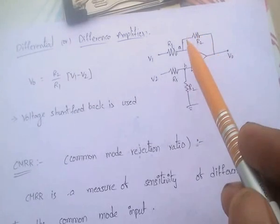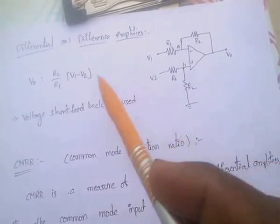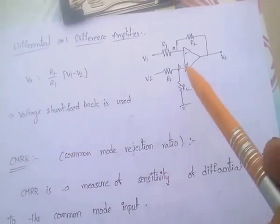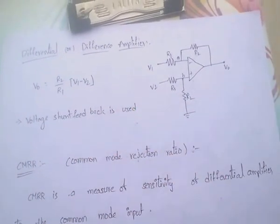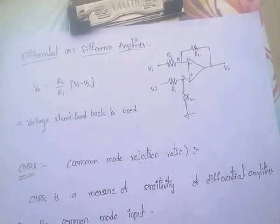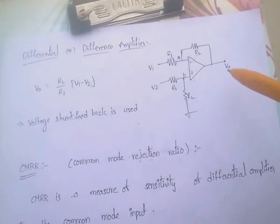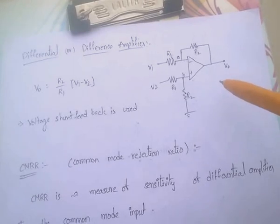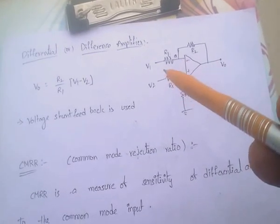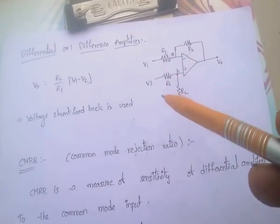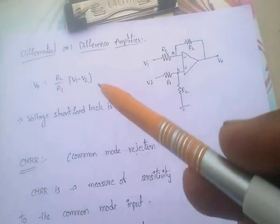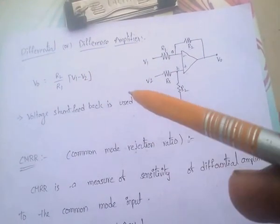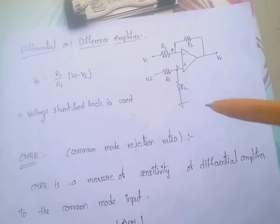The feedback is voltage shunt feedback. In case of differential amplifier, voltage shunt feedback is used. The output is the difference of the input values, that is V0 equals R2 by R1 into V1 minus V2.